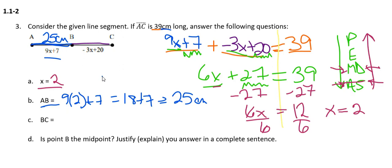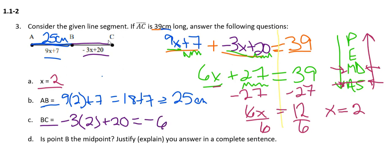We can do the same thing to find the length of BC. Its equation says to multiply x by negative 3 and then add 20. So I do negative 3 times 2, which is negative 6, then add 20 to finish the problem. I get the number 14 centimeters. That means the right side of my line segment is 14 centimeters.